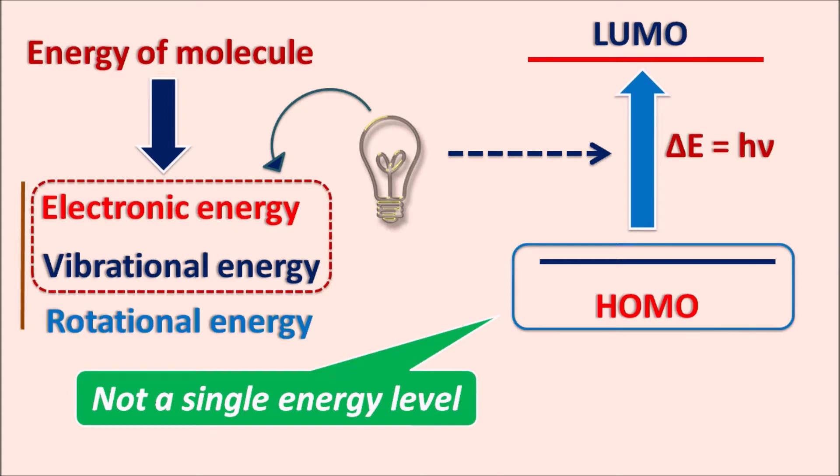How do electronic transitions take place, and what is the state of the electron in the ground and excited states? The ground electronic state is indicated by E0, associated with different vibrational states V0, V1, V2, V3, and so on. HOMO corresponds to E0 with its vibrational substates; similarly, LUMO is indicated by E1, also associated with different vibrational states.